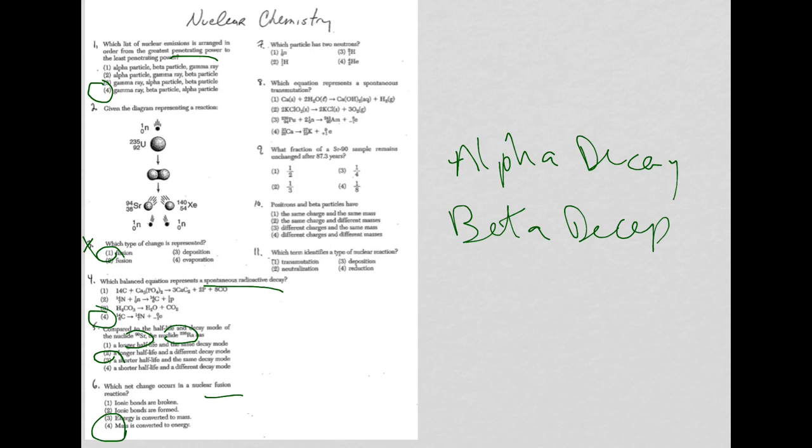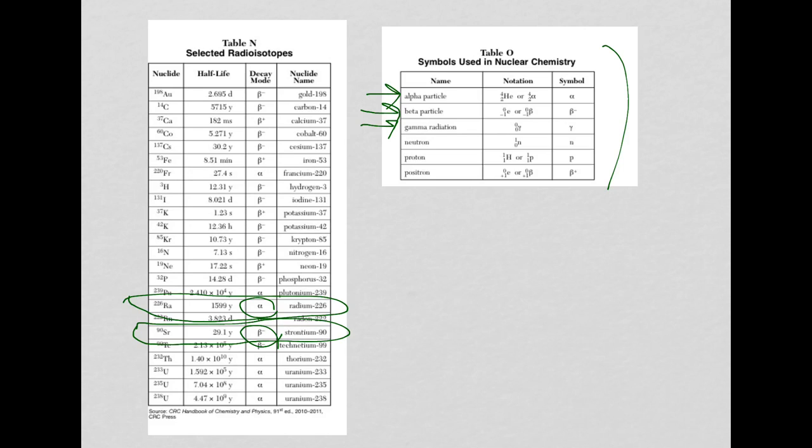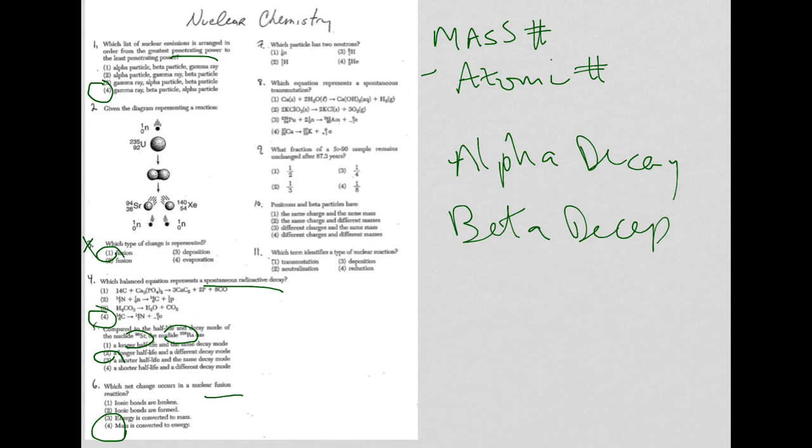Question seven: which particle has two neutrons? To figure out neutrons, you always do mass number minus atomic number. This is no different when dealing with an atom. The reason I put it here is because it said which particle. These are particles that are also listed on reference table O. We'll do one minus zero, which is one for choice one.